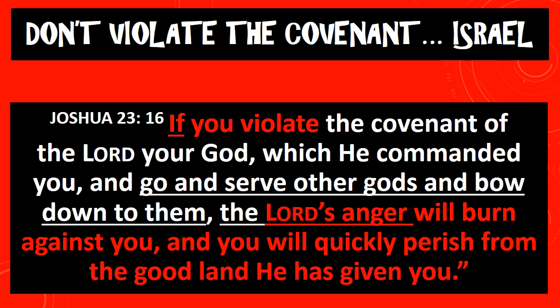In Joshua, God had made a covenant with his people, saying don't violate the covenant of your Lord. Don't go serve those gods or bow down to them, or the Lord's anger will burn against you. That land of milk and honey that God promised to your ancestors — God will quickly cause you to perish from that land if you do thus and so.